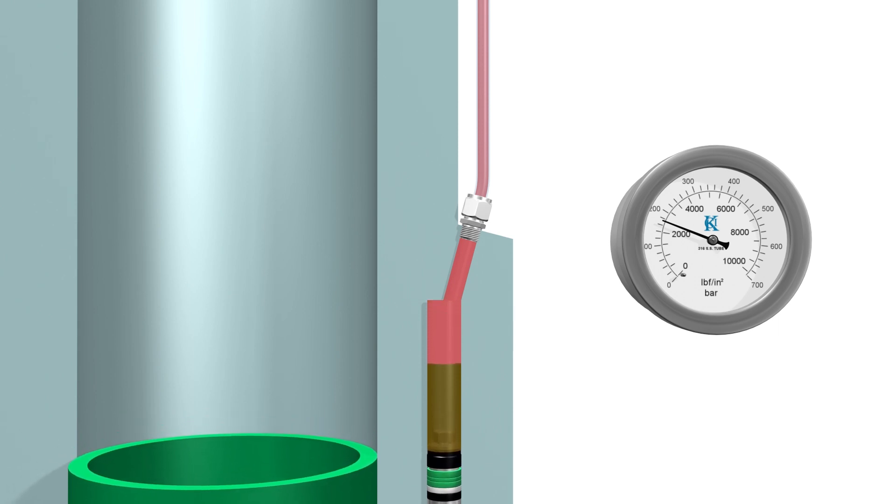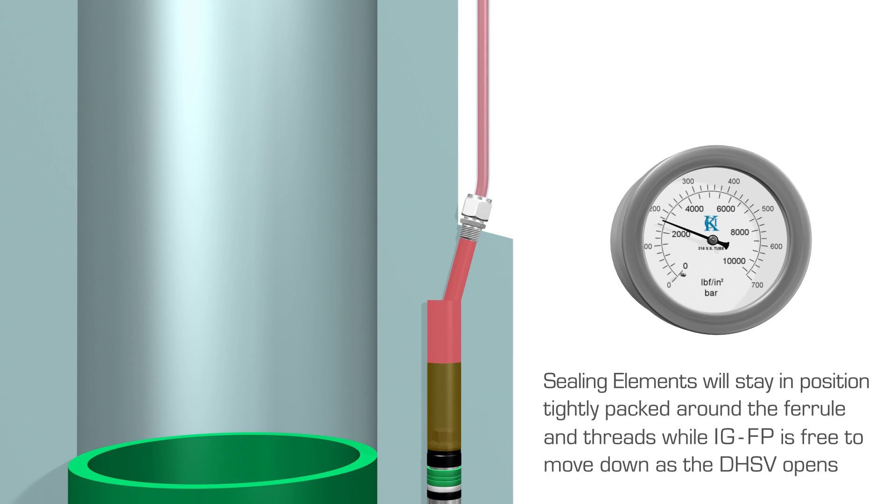The sealing elements will stay in position tightly packed around the ferrule and threads, while the remainder of the IGFP is free to move up and down as the downhole safety valve opens and closes.